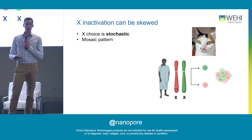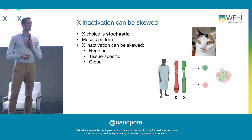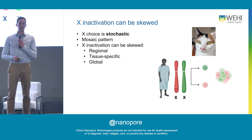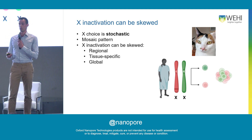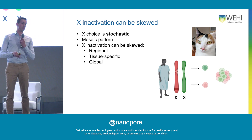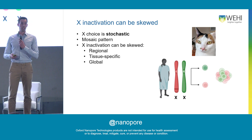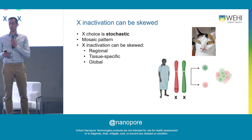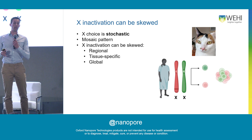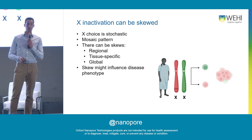Females are mosaics, but it's not always 50-50. You can have skewed inactivation. This could be regional — patches of coat color in cats — or tissue-specific, where maybe the brain is skewed one way and the rest of the organism isn't, or it can be global. Since there are only a few cells when X inactivation first occurs, by chance all those cells can make the same decision and you end up with only red cells, for instance.